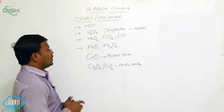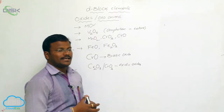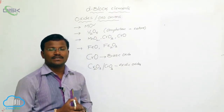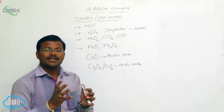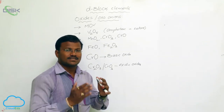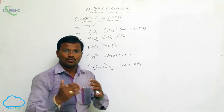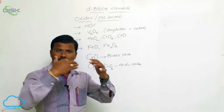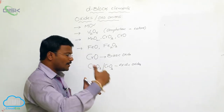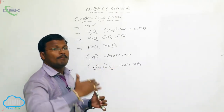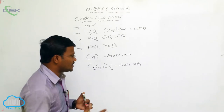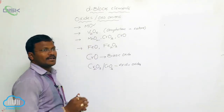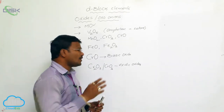In these oxides, D-block elements — especially from the 3D series — can exhibit various oxidation states, starting from scandium at +3, and ranging through +2, +4 in chromium, copper, and manganese, up to +7 oxidation states exhibited by D-block elements in their oxide forms.